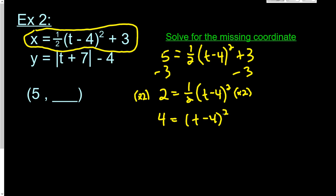And then we need to cancel out the squaring. So I'm going to square root both sides. And I get square root of 4 is 2 or negative 2. Remember, it's plus or minus 2. And then we get t minus 4 on the other side.